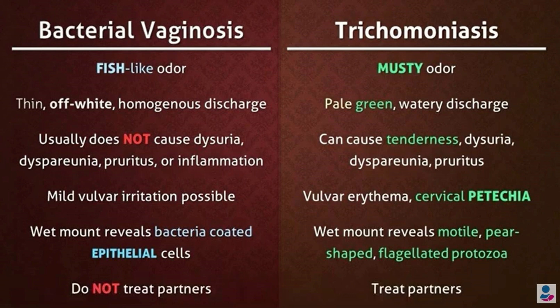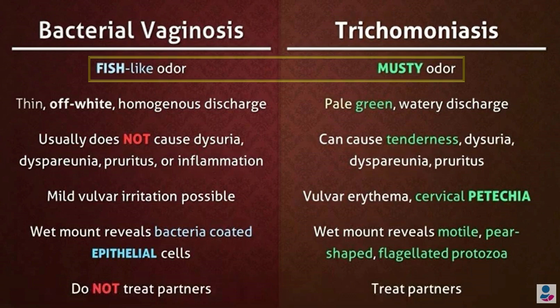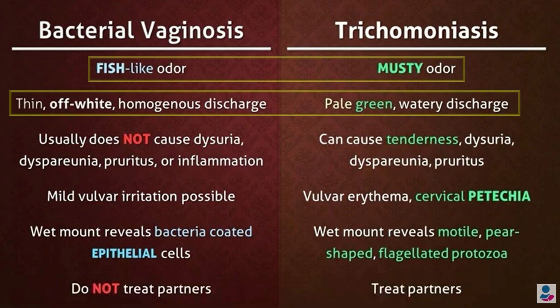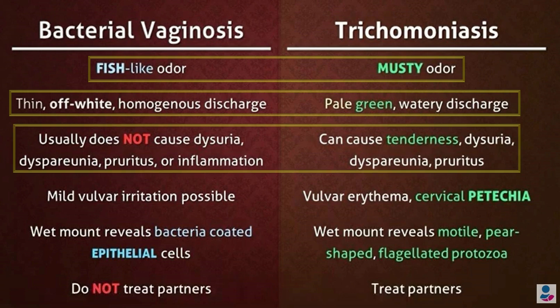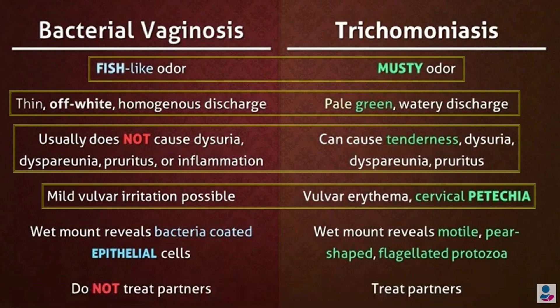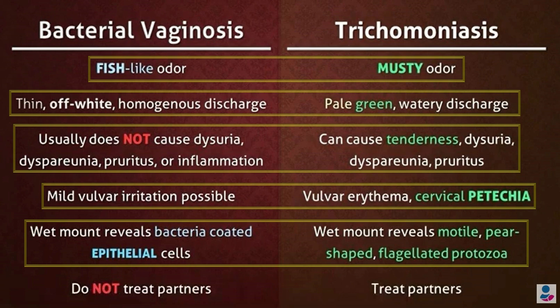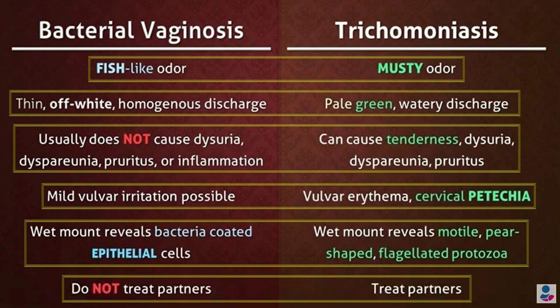This table shows the differences between bacterial vaginosis and trichomoniasis. There is a fish-like odor in bacterial vaginosis and a musty odor in trichomoniasis. In bacterial vaginosis, there is thin off-white homogeneous discharge, whereas it is pale green watery discharge in trichomoniasis. Bacterial vaginosis usually does not cause dysuria, dyspareunia, pruritus, or inflammation, whereas trichomoniasis can cause tenderness, dysuria, dyspareunia, and pruritus. There is mild vulval irritation in bacterial vaginosis, whereas there is vulval erythema and cervical patchiness in trichomoniasis. The wet mount in bacterial vaginosis reveals bacteria-coated epithelial cells, whereas in trichomoniasis it reveals motile, pear-shaped, flagellated protozoa. There is no need to treat the partner in bacterial vaginosis, but treatment is needed in trichomoniasis.